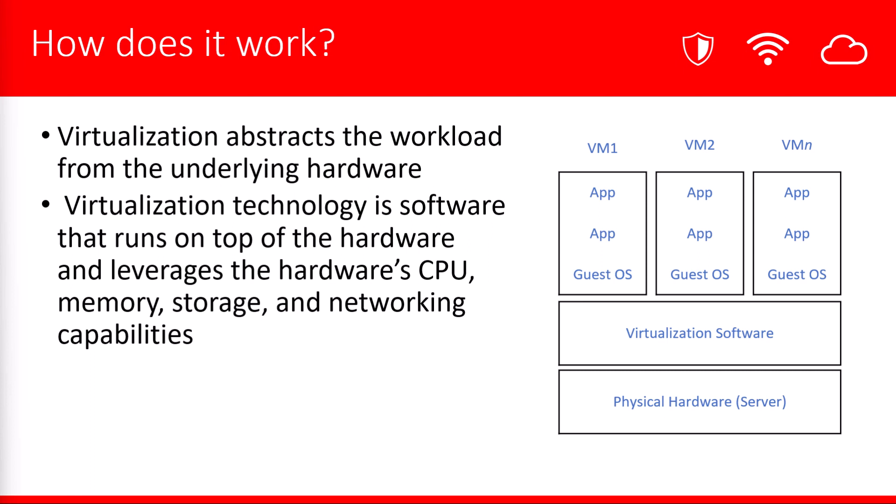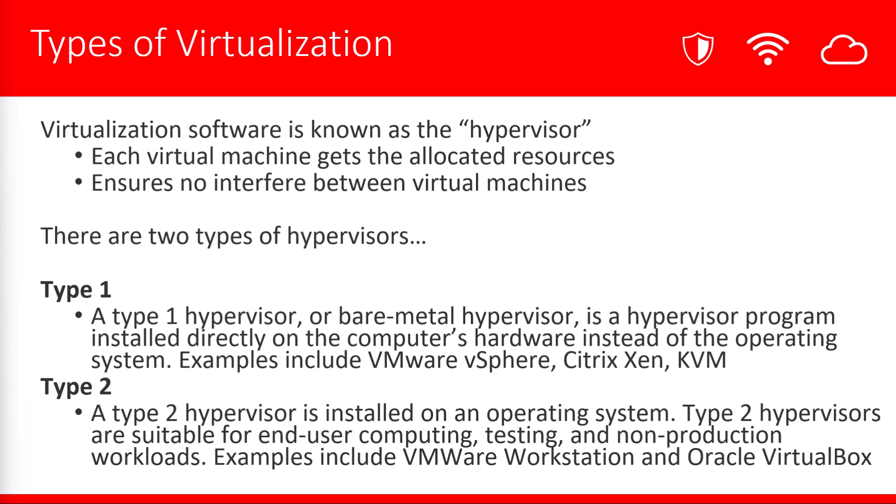This image here is a depiction of a type 1 hypervisor — we're going to be talking about type 1 and type 2 next. The hypervisor is the actual virtualization software, and its purpose is to ensure that each virtual machine gets access to the resources on the physical device. It also makes sure there is a boundary so that virtual machines don't interfere with one another.